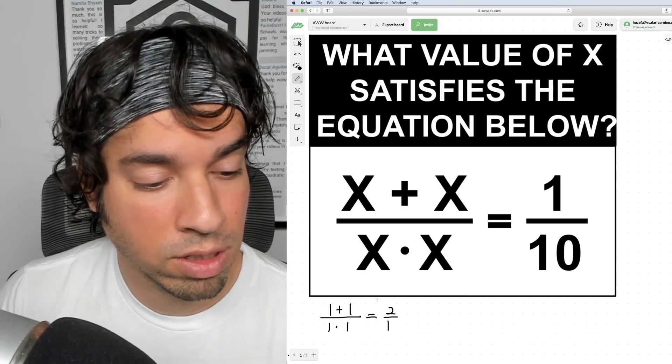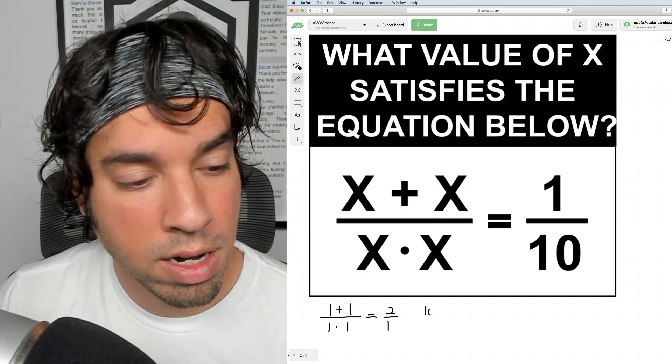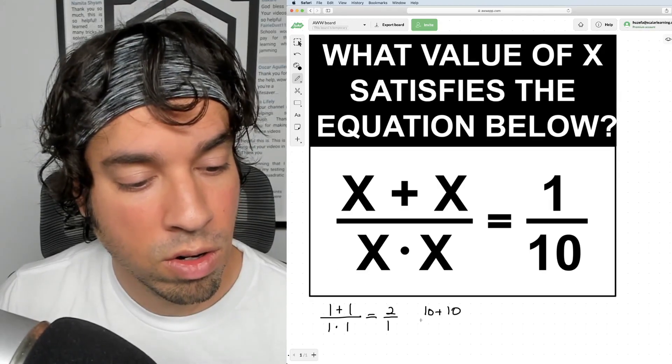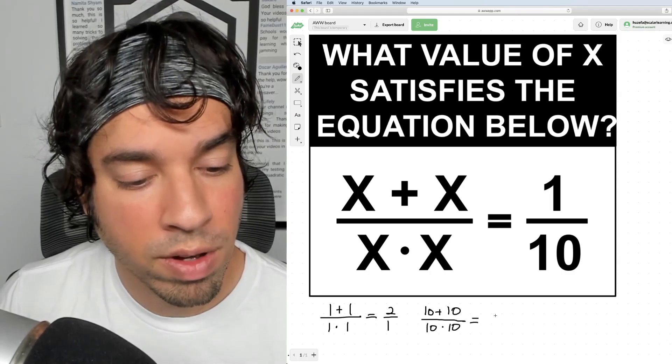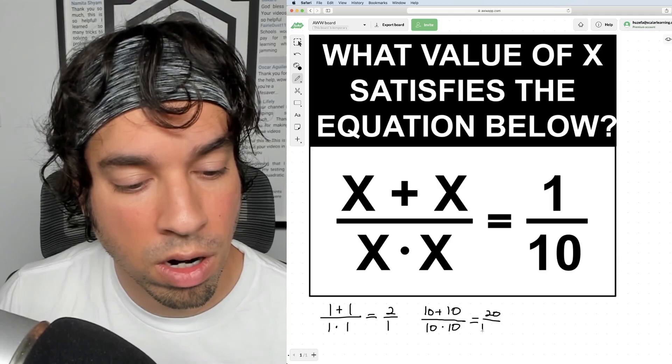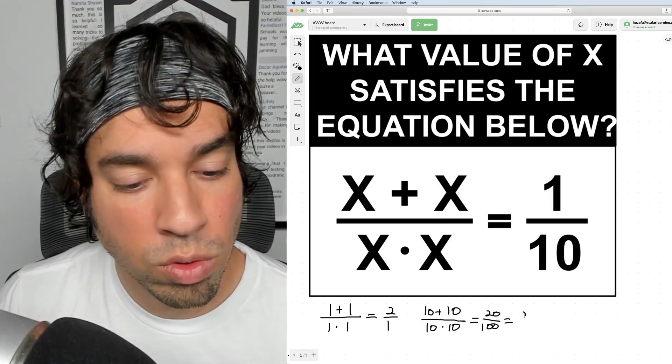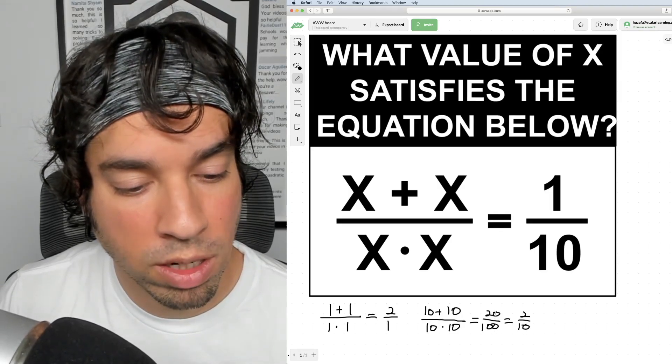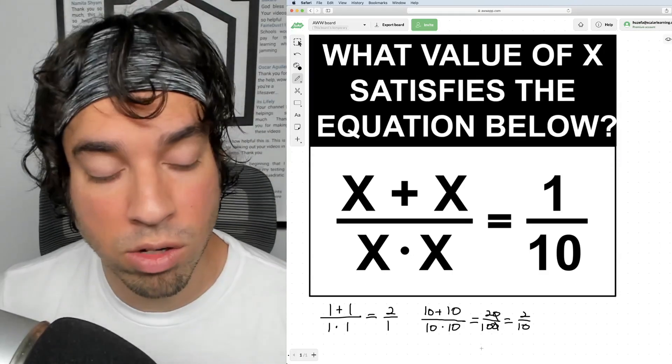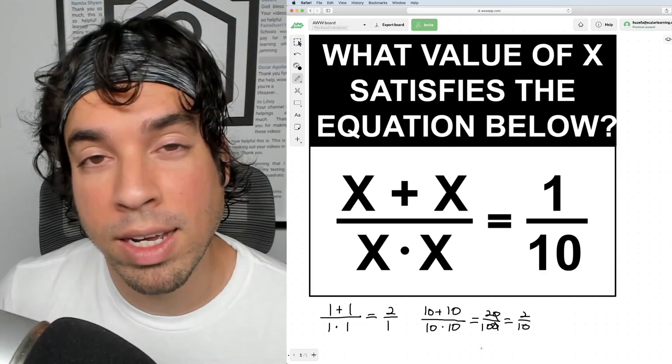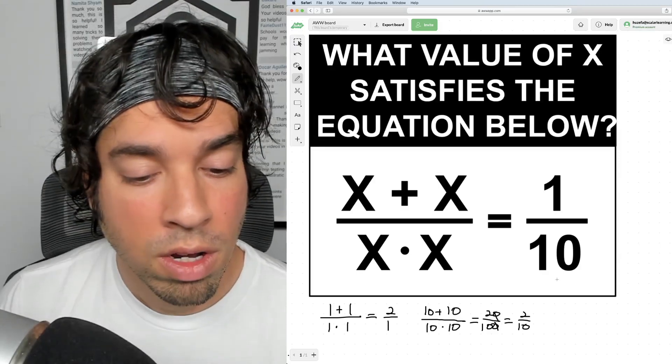Let's just jump in with 10, for example. What if I do (10 + 10) / (10 · 10)? In this case, we've got 20/100, which reduces to 2/10, and if we cancel out a zero there, further reduces to 1/5. But we see now we're a lot closer. So we know we're kind of on the right track, and you can keep trying this out until you get to the value of 20.